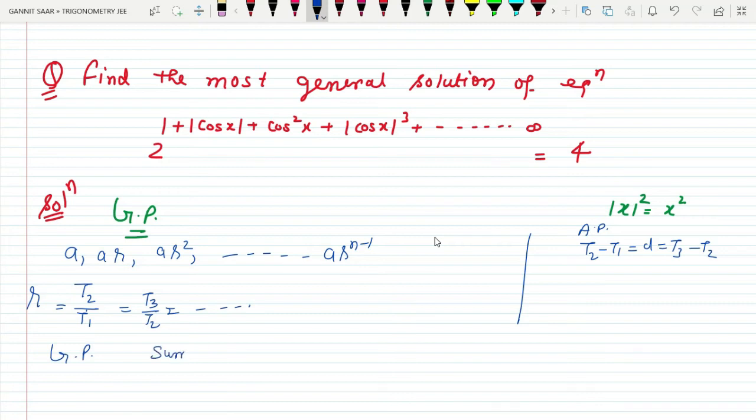For sum of infinite GP, I'll tell you the formula: S equals a upon 1 minus r. What is a? Just like in AP where a is the first term, similarly in GP, a is the first term.